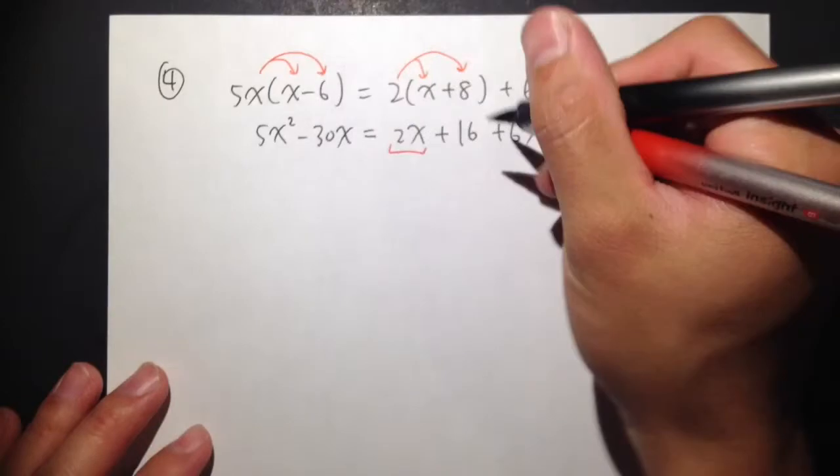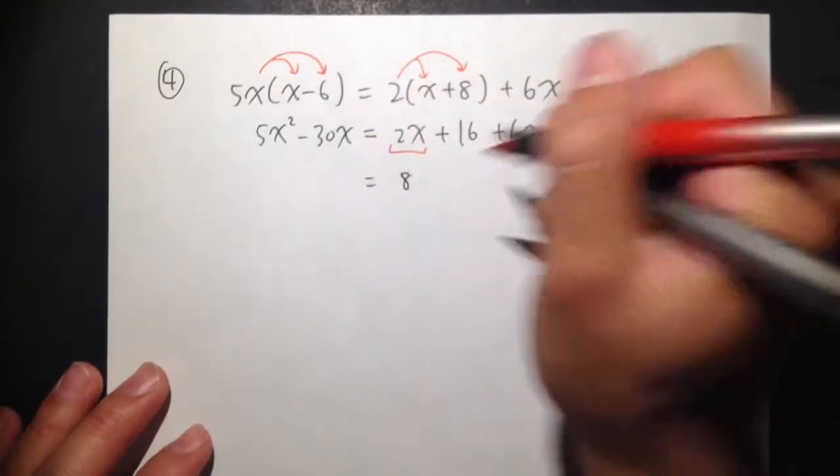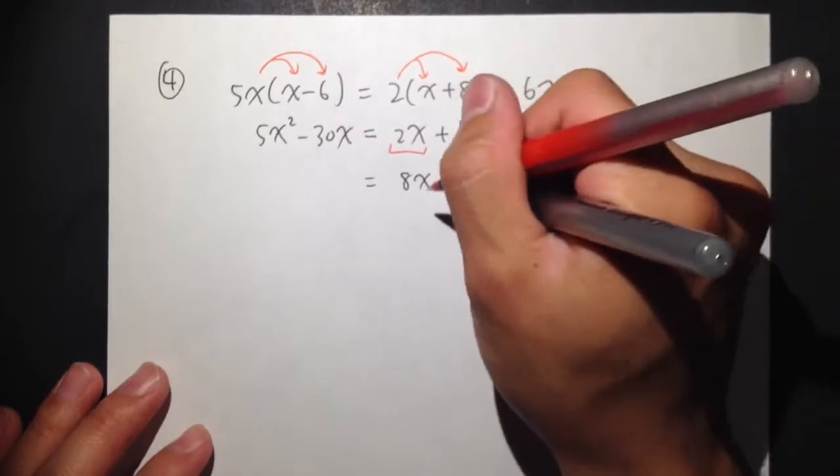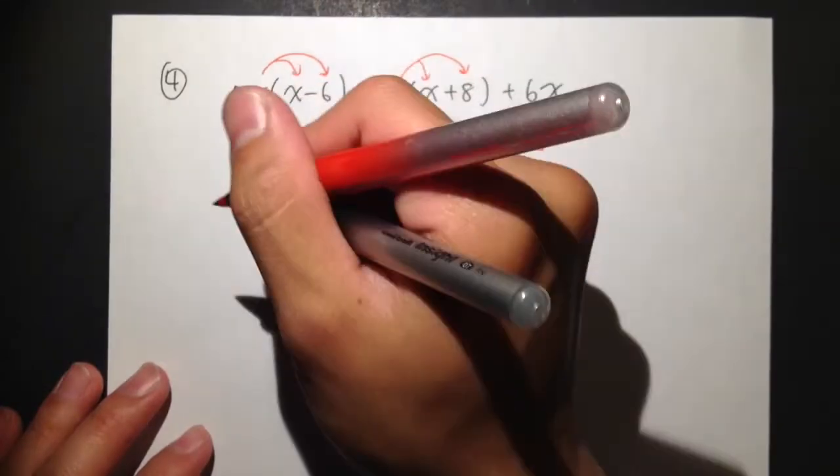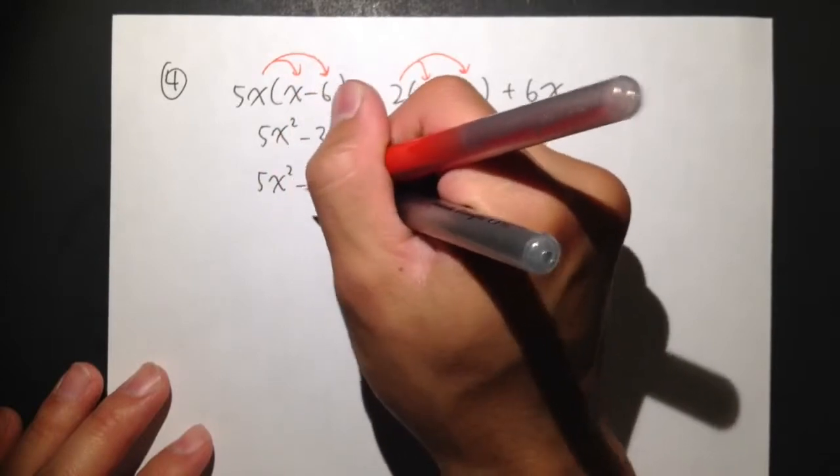I see that we have 2x here, and 6x there. So that we can write this as 8x plus 16. And the left-hand side states the same. 5x squared minus 30x.